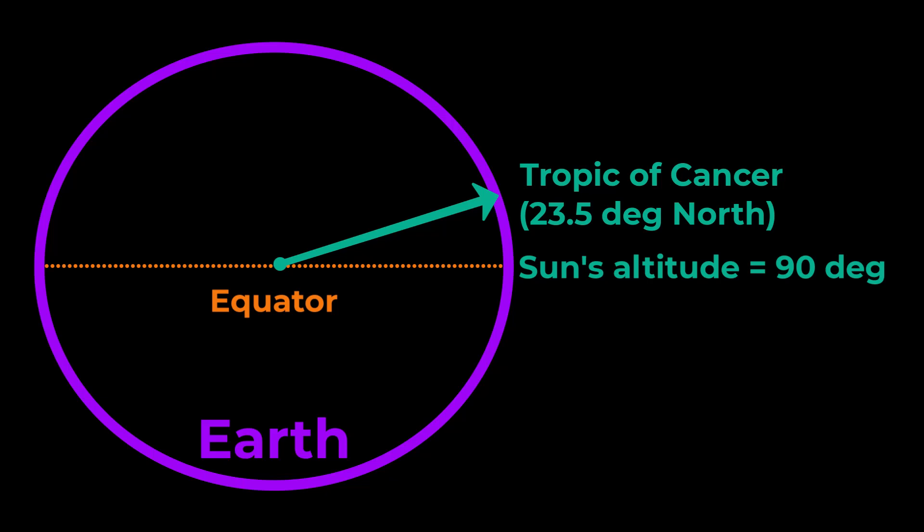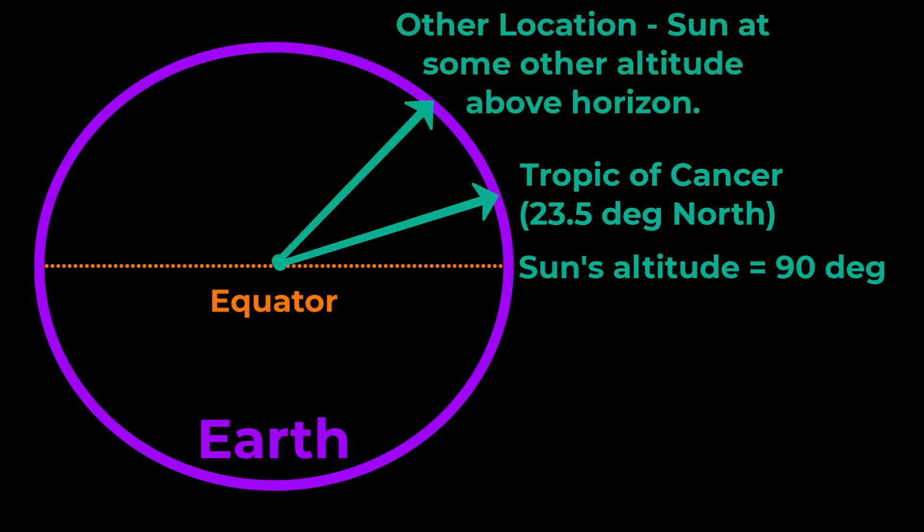But Eratosthenes didn't live near the Tropic of Cancer. He was way north of there and he knew that there definitely were shadows at noon on the day of the summer solstice where he lived up in northern Egypt. And this does two things. First of all it provides a second line of evidence showing that the earth is curved rather than flat. And second,